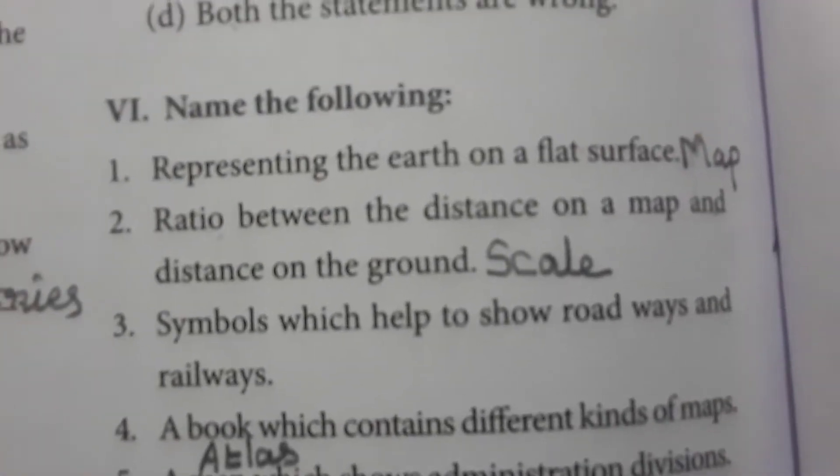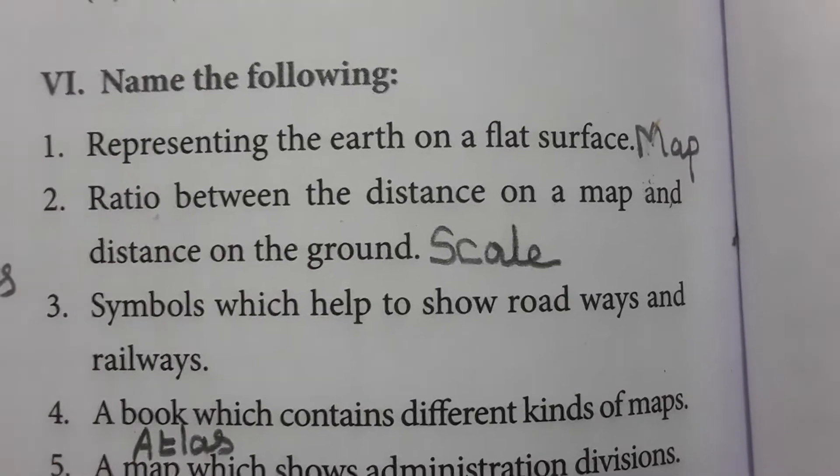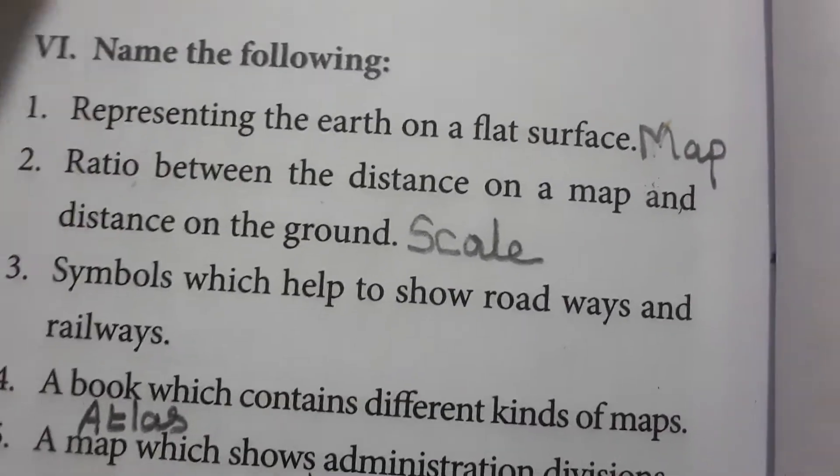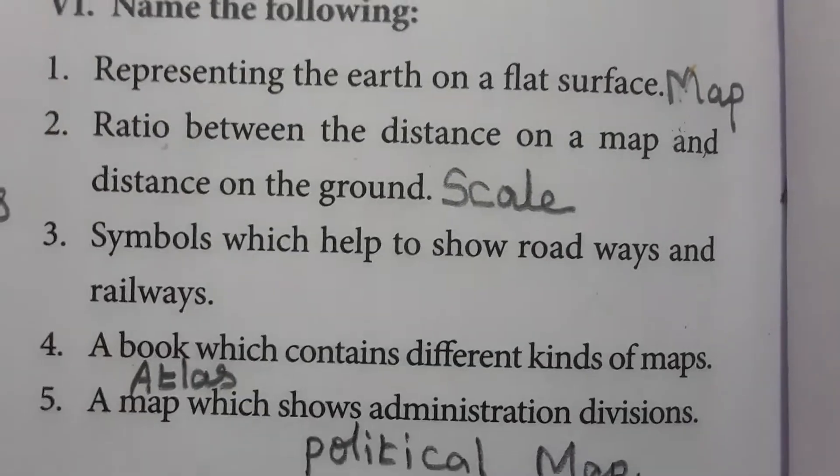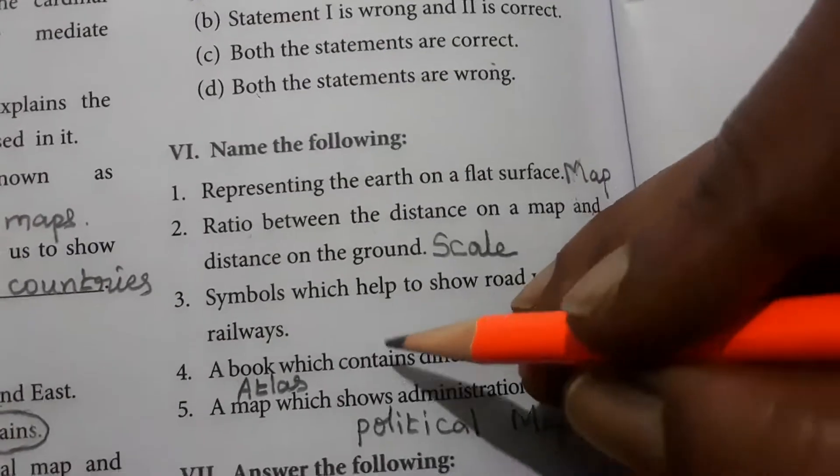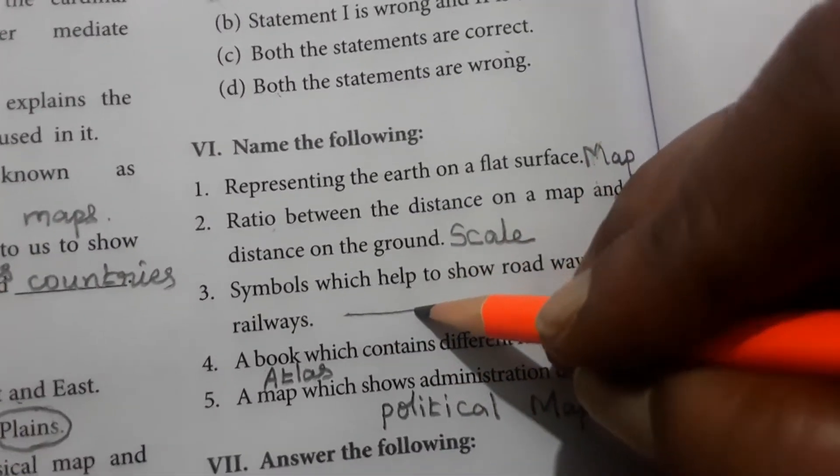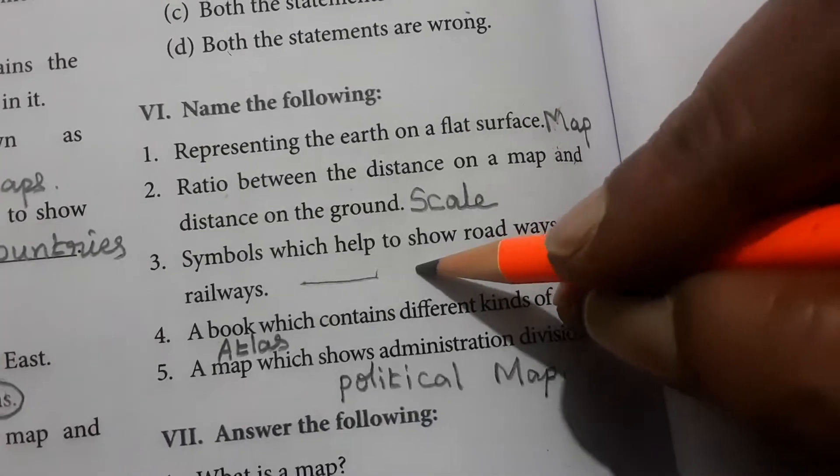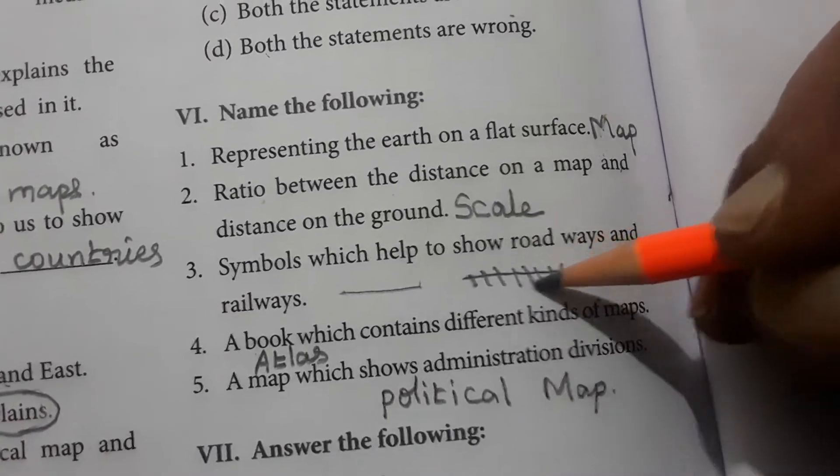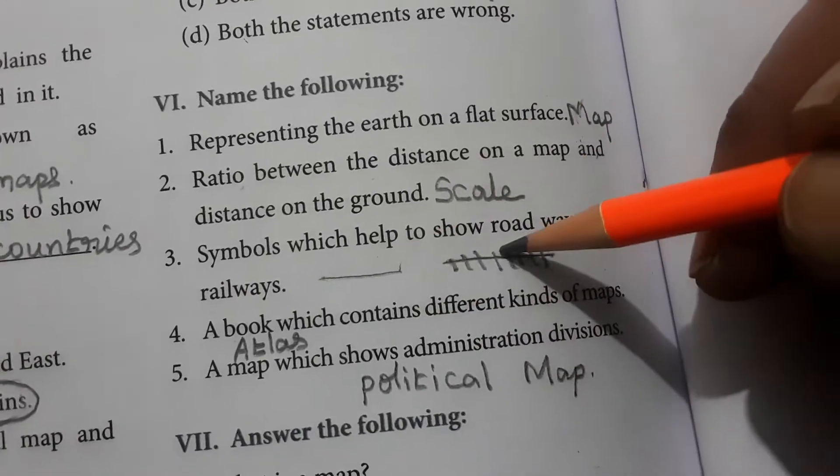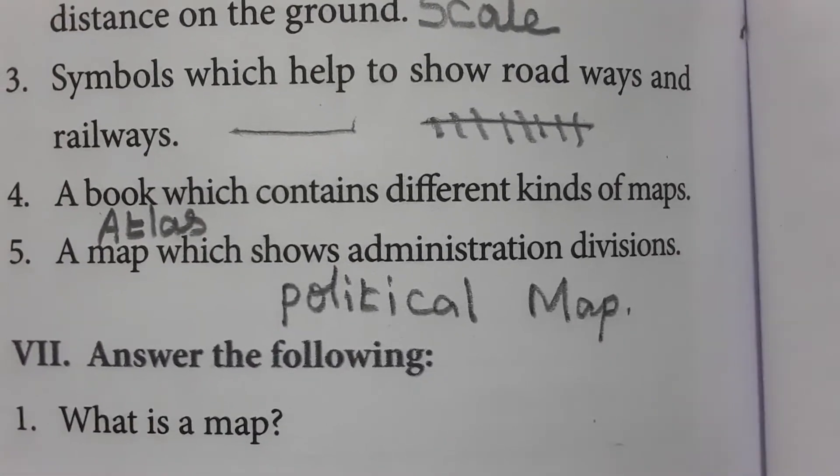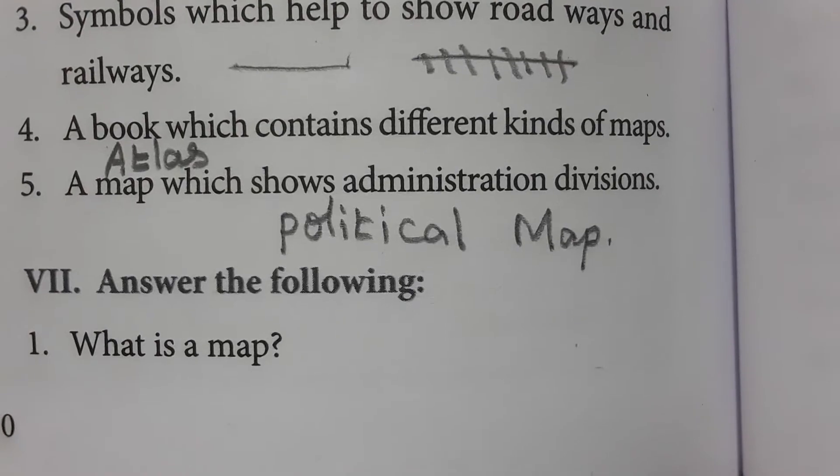Name the following: Representing the earth on a flat surface is a map. Ratio between the distance on a map and distance on the ground is scale. Symbols which help to show roadways and railways - this straight thick bold line is for roadways, and this is the symbol for railways. A book which contains different kinds of maps is atlas. A map which shows administration divisions is political map.